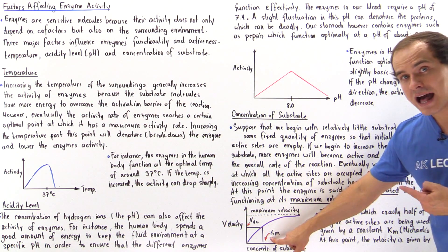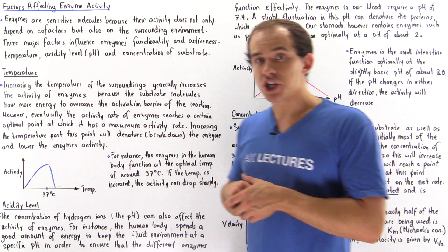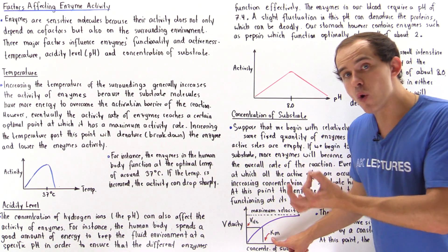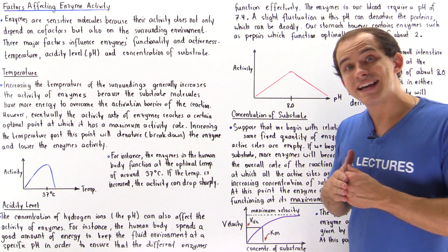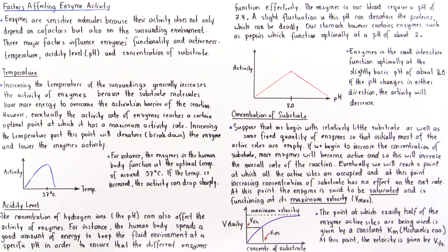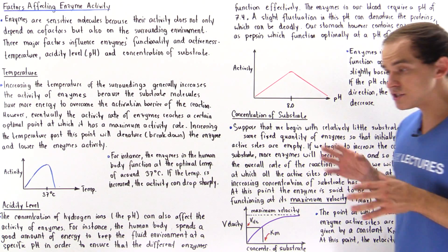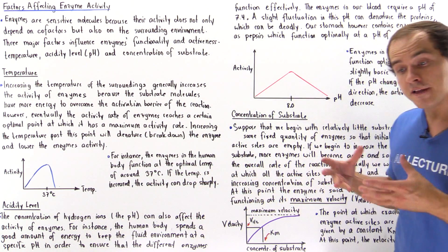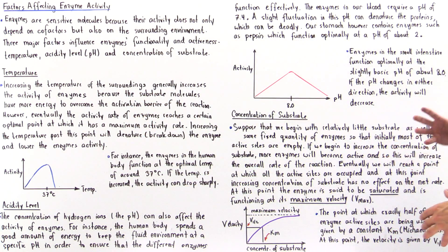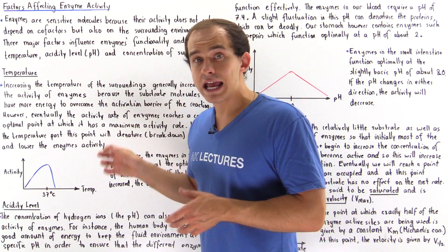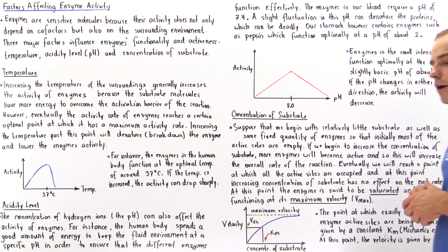A very low Km value for any given enzyme means that the enzyme has a very high affinity for the substrate, because a low Km means only a small quantity of substrate is required to fill up exactly half of our enzyme active sites. Conversely, a high Km value means that we need a lot of substrate to fill exactly half of those active sites. So these are the three factors that affect enzyme activity and functionality: temperature, pH level, and the concentration of our substrate.